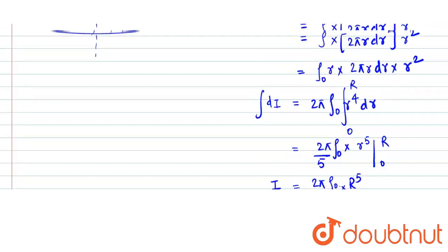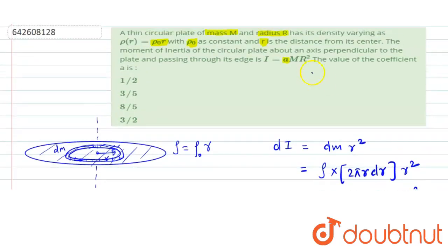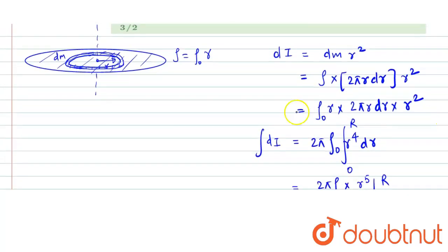But in the answer it is given to us not in terms of rho naught, it is given to us in terms of mass. So we also have to find the total mass in terms of rho naught. For writing the mass, we can put dm. As we know, dm is density into area. So that is rho into 2 pi r dr. This is the mass of the element.